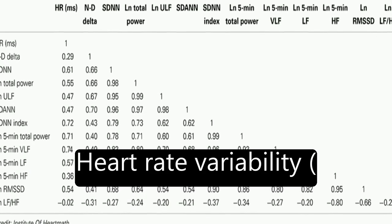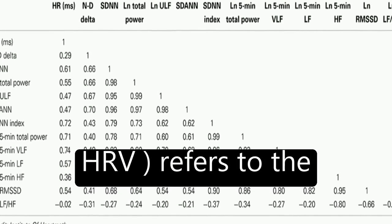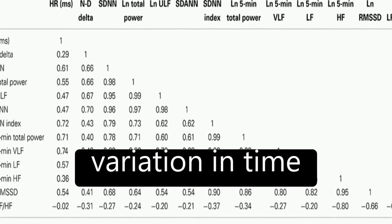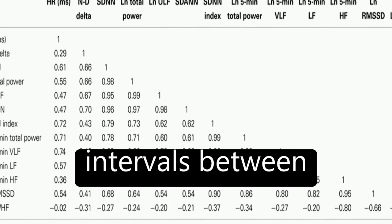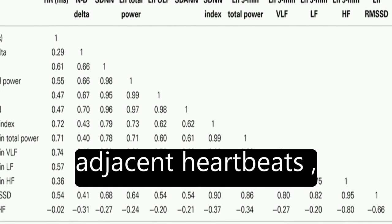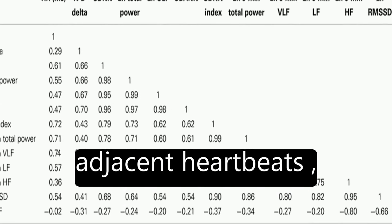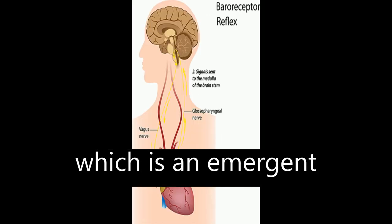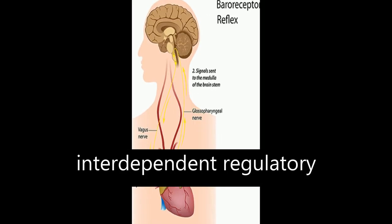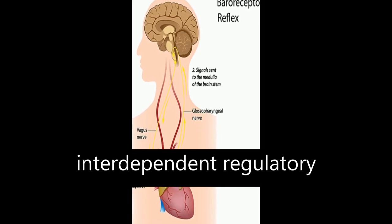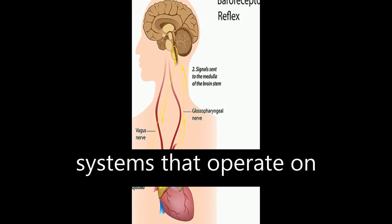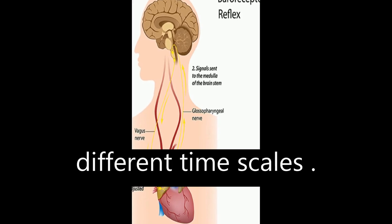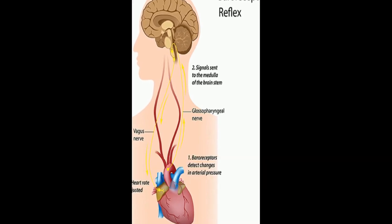Heart rate variability, HRV, refers to the variation in time intervals between adjacent heartbeats, which is an emergent property of interdependent regulatory systems that operate on different timescales.